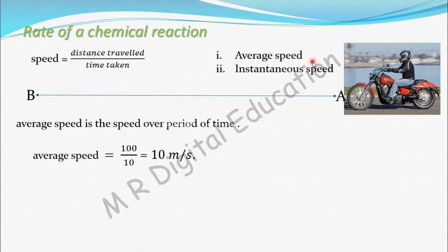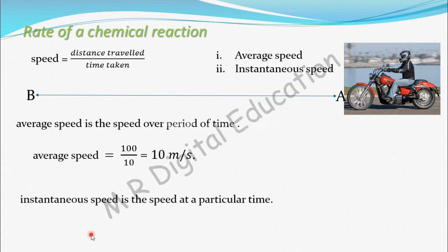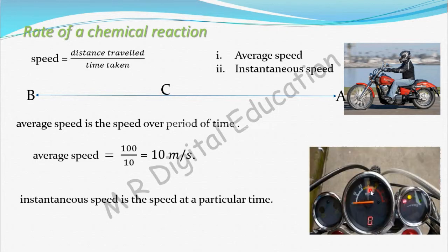Instantaneous speed is the speed at a particular instant in time. Unlike average speed, which is taken over a period of time, instantaneous speed tells you exactly how fast you are going at one specific moment. You may have seen the speedometer in front of your bike — it shows you the speed at each and every instant, and that is instantaneous speed.